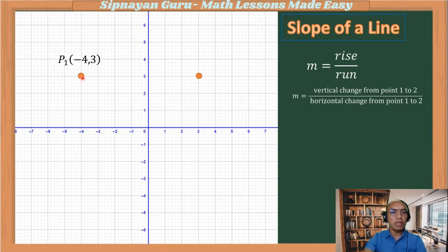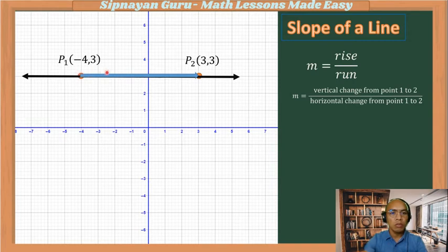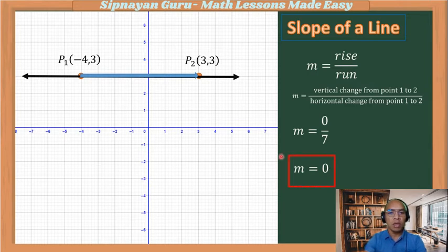Suppose point one is (−4, 3) and point two is (3, 3). Connecting them, what is the slope? In this case, there is no vertical change because we did not move up or down — we only moved horizontally. Therefore the vertical change is zero. The horizontal change is 1, 2, 3, 4, 5, 6, 7 units to the right — that is 7. Zero divided by 7 is zero. The same result holds starting from point two, so the slope is zero.